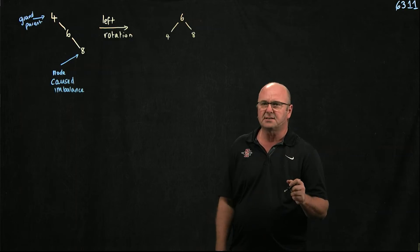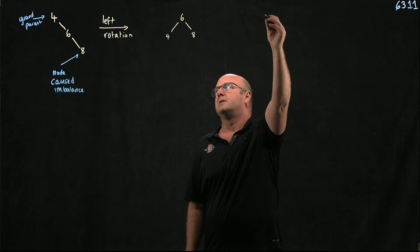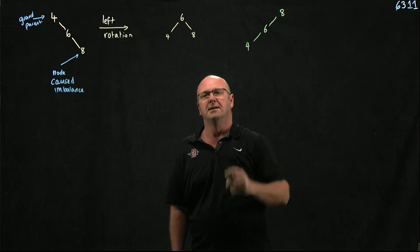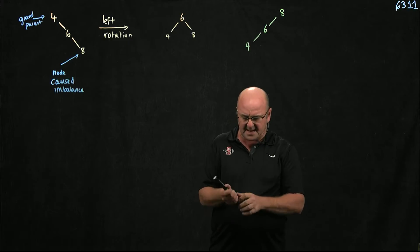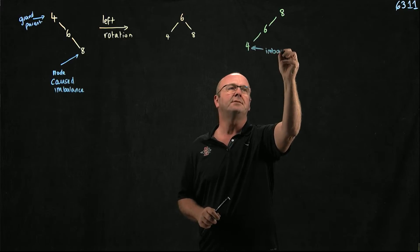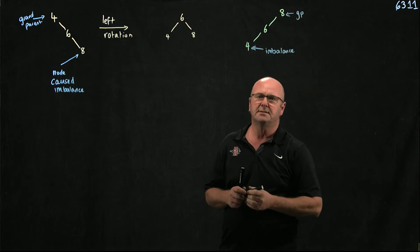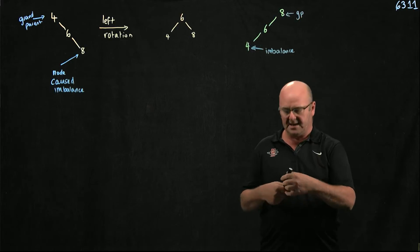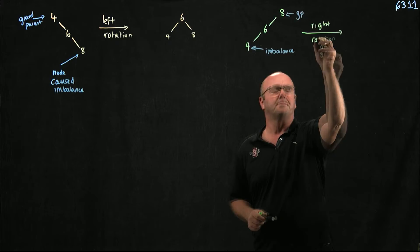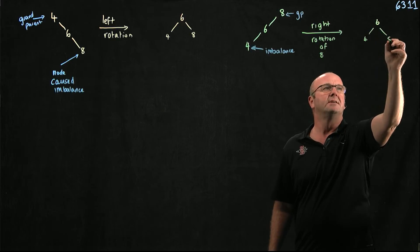In contrast, if we have the situation where we have 8, then 6, and then 4 — again, the 8 and the 6 are quite happy. The node that caused the imbalance is the 4, and the node that has to pay is the grandparent. In this case, we do a right rotation of the 8, and we end up again with our balanced tree.